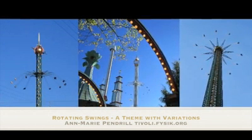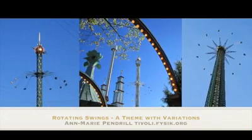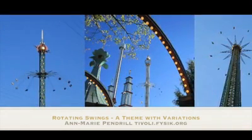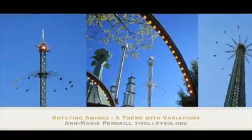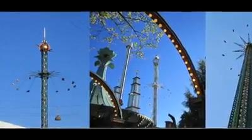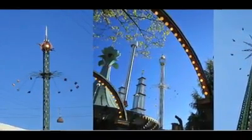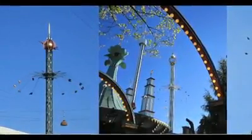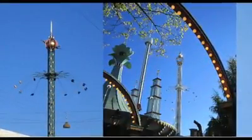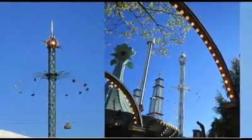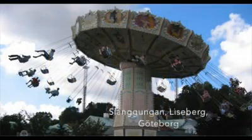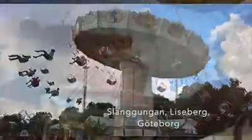Rotating swings or chair swing rides are found in many amusement parks. They involve beautiful physics that often goes unnoticed. As the ride rotates, the swings hang out and move in circles with larger diameters, and the diameter is independent of the mass of the swing. This is a consequence of the principle of equivalence between the gravitational mass